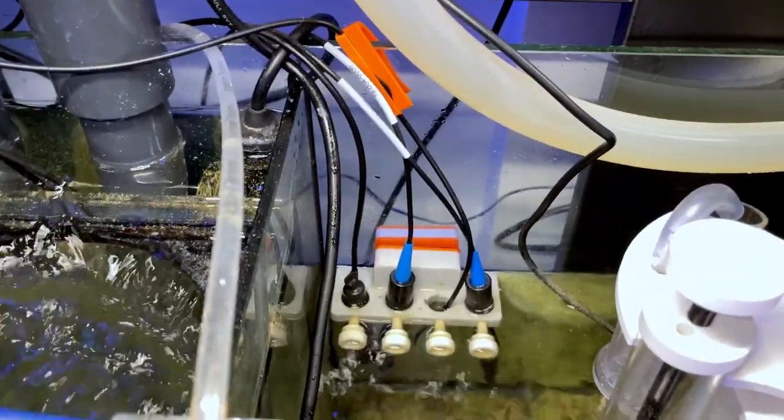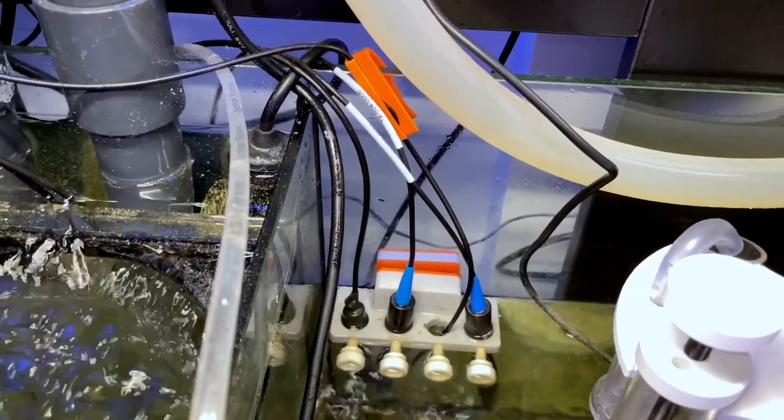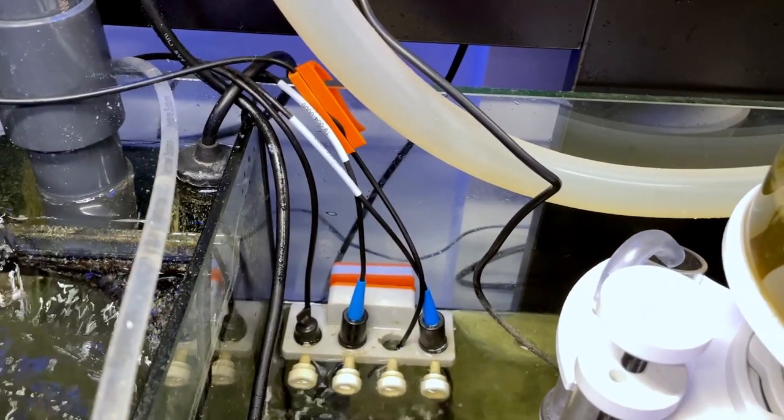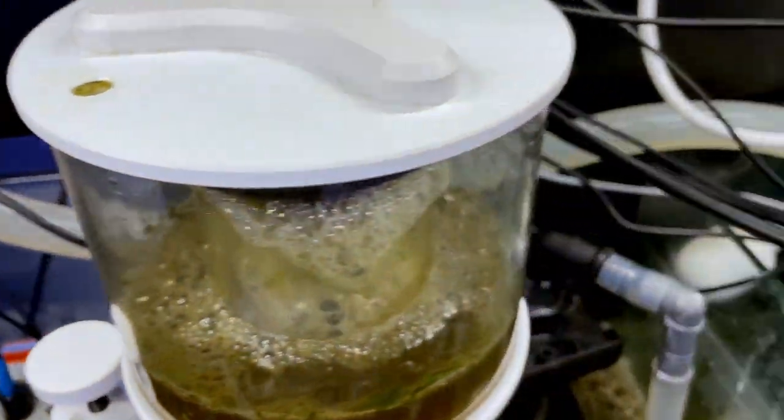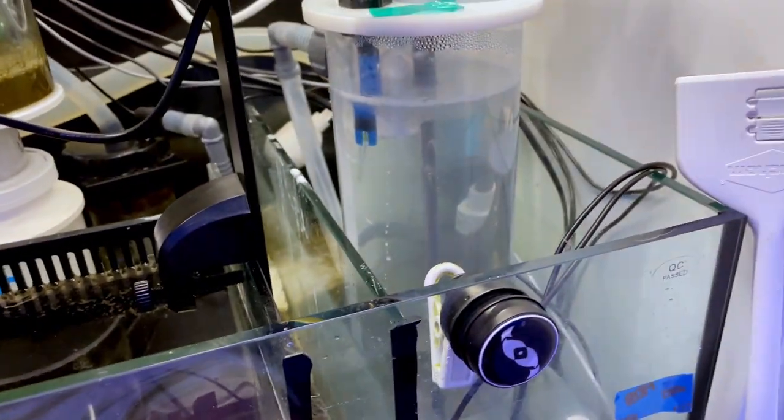Then I have my apex probe here. I have left to right. We have temperature, pH, the trident line. I'll show you the trident in a second. And then we have salinity. Okay. I showed you the phosphan reactor.